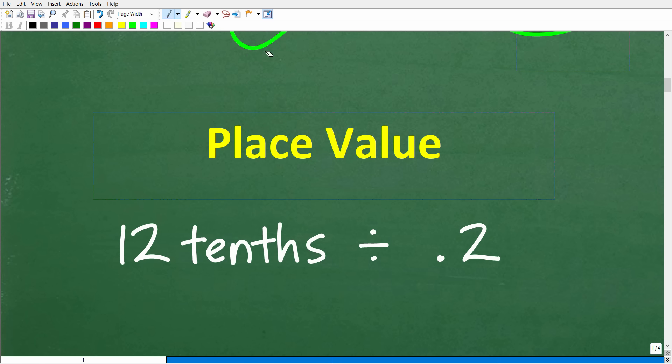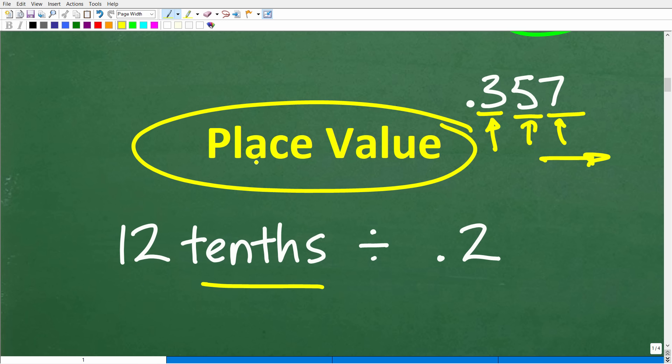There is a separate part of this problem which has to deal with fractions, but we can't even get into the problem unless we understand what 12 tenths is and what 0.2 is. We need to be able to communicate in the same numeric language. So what we're talking about is place value. Place value is all that stuff we learned way back in third or fourth grade. If we have 0.357, what place is the 3 in? The 3 is in the tenths place, the 5 is in the hundredths place, and the 7 is in the thousandths place.